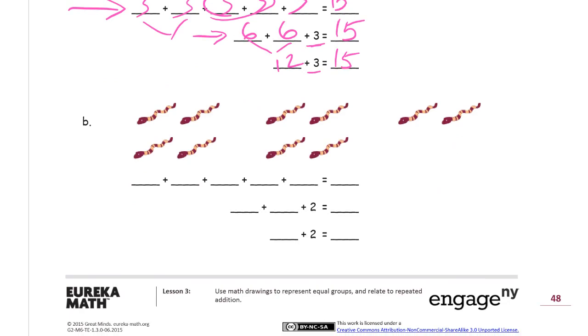All right, and these look like worms. And they're in groups of two. Two, four, six, eight, ten. We can count them. But we need five groups of two. So two, two, two, two, two.